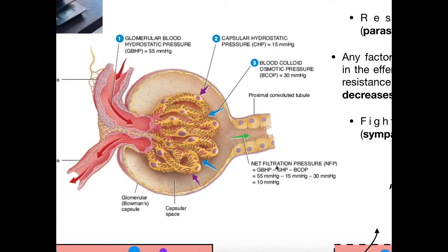One way we can regulate net filtration pressure — either increase it or decrease it — is by altering glomerular blood hydrostatic pressure. If this pressure increases, then net filtration pressure increases. If we decrease it, we decrease net filtration pressure. And net filtration pressure affects what we call glomerular filtration rate, or GFR. Anything that increases net filtration pressure increases GFR; anything that decreases it decreases GFR. So let's look at general ways we can regulate and change the glomerular filtration rate.